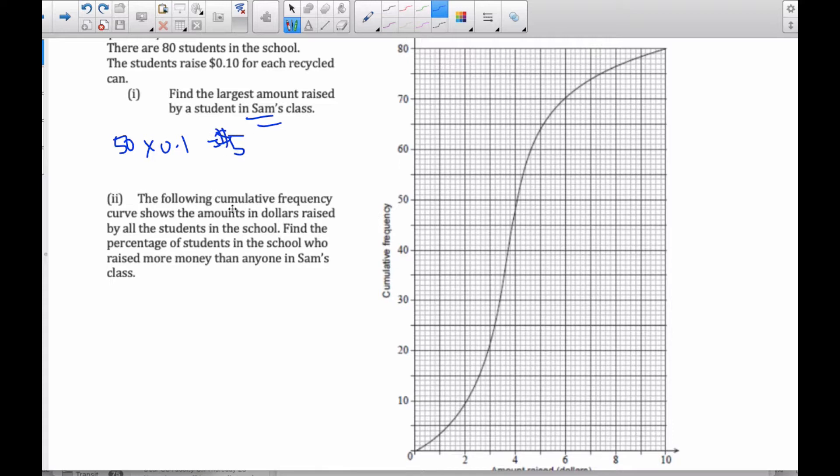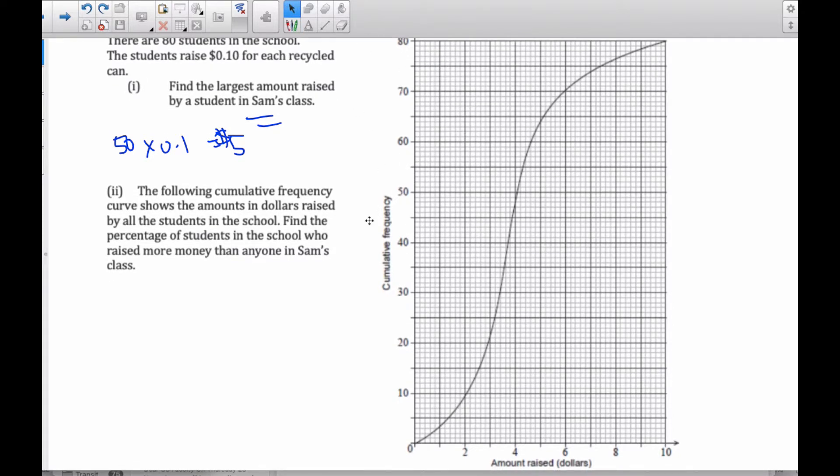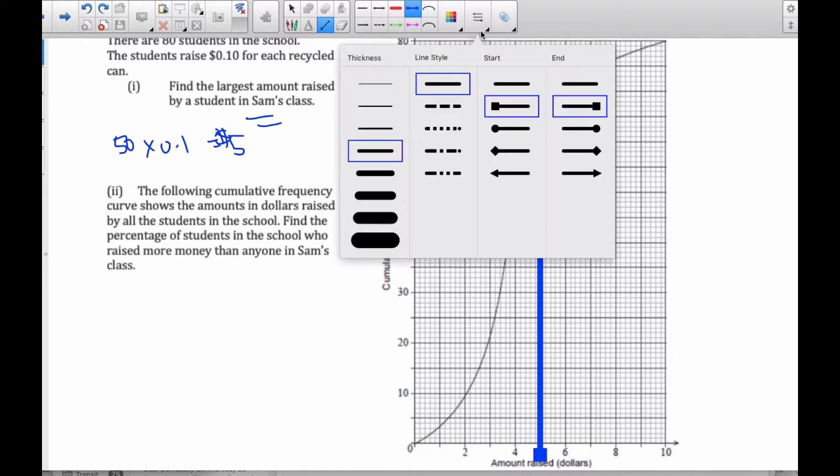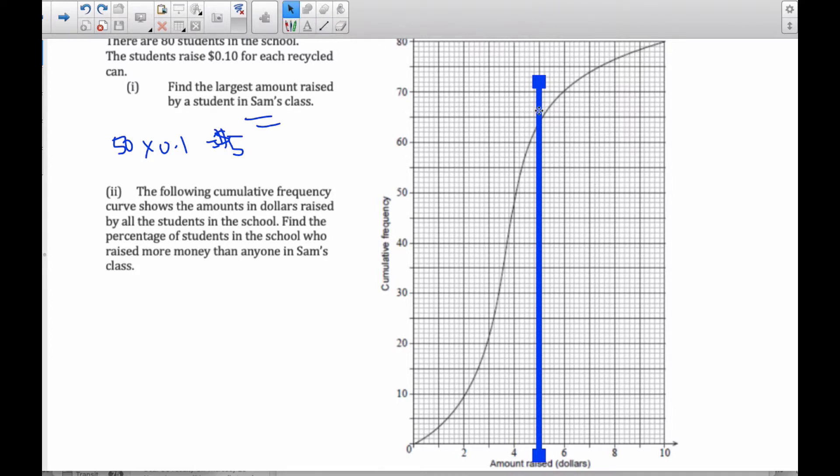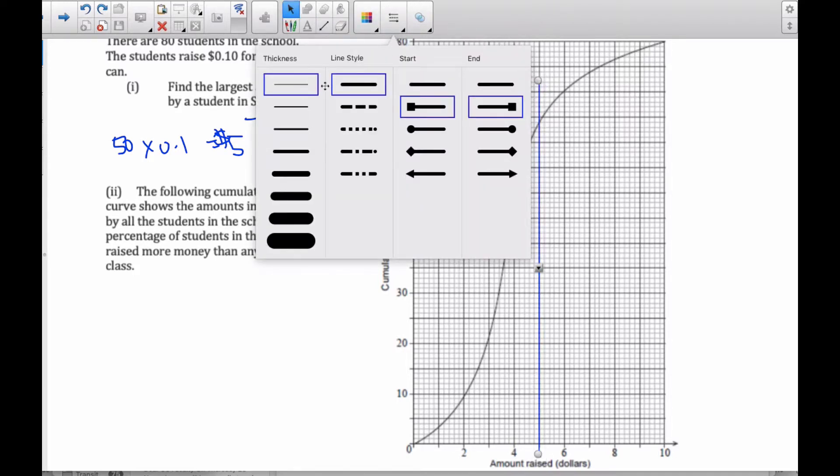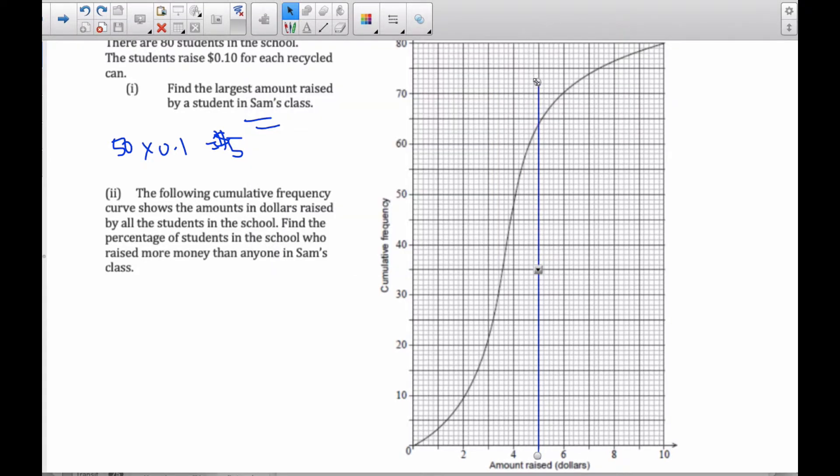So now, using the following cumulative frequency shows the amount of dollars raised by all students. So here's dollars raised, this is the dollars raised by the cumulative frequency of number of students. And so we know that we are looking for $5. Well, $5 is here. Let's see if we can make that a little bit narrower so we can interpret it a little bit better. Okay, so here is the line.